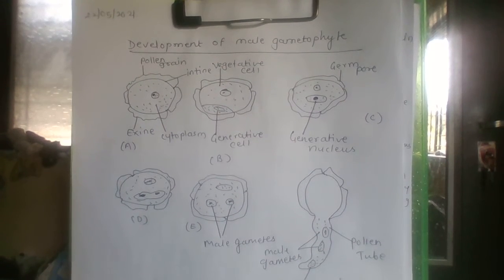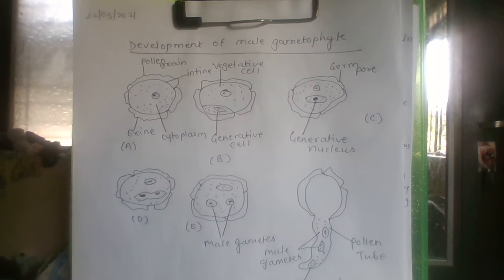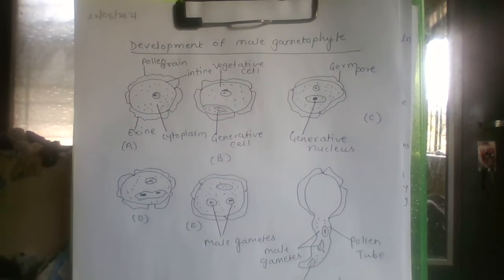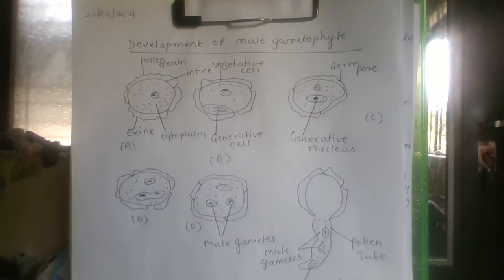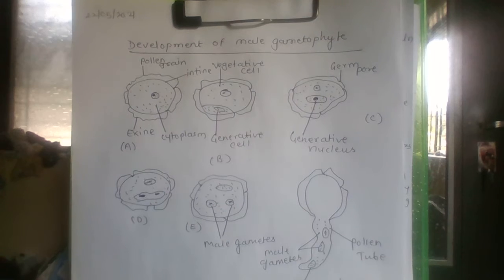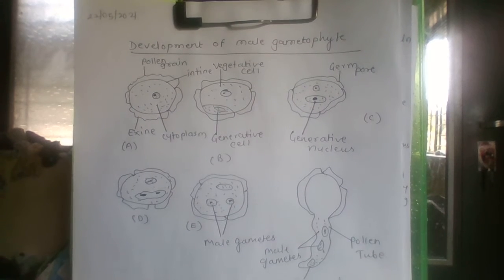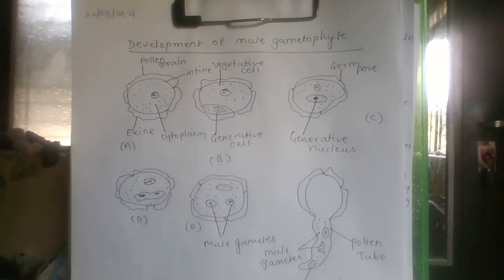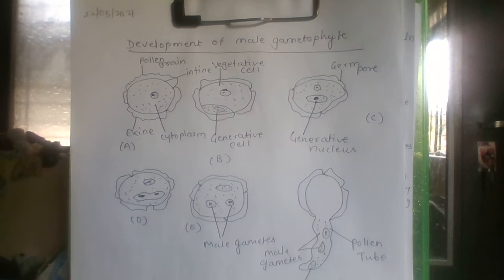As we discussed in the structure of pollen grain, there is a two-wall layered structure. The outer layer is called exine and the inner wall is called intine. The pollen grain marks the beginning of the male gametophyte.